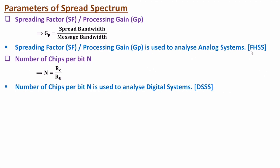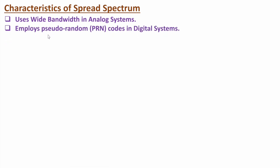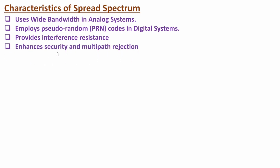Now let me explain key characteristics of spread spectrum. With spread spectrum we have wider bandwidth in analog systems, and by employing pseudorandom codes one can have digital systems. Spread spectrum provides interference resistance — wider bandwidth gives better interference resistance. It also enhances security and provides multipath rejection.